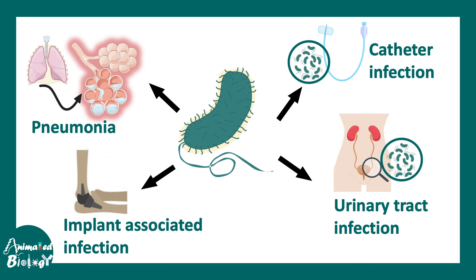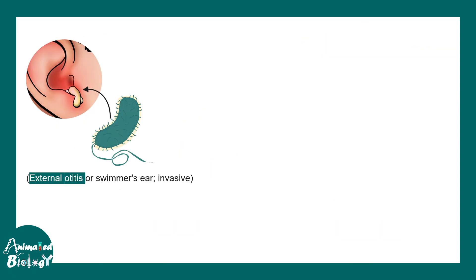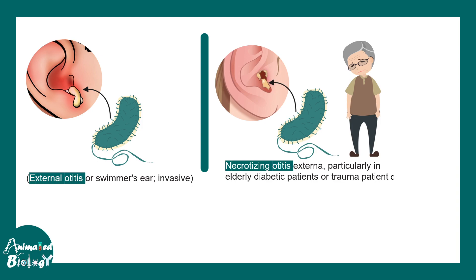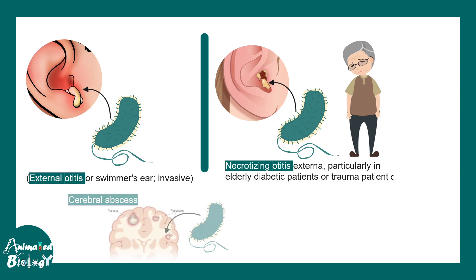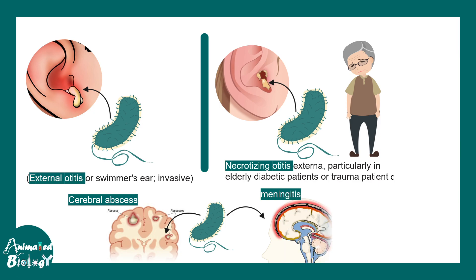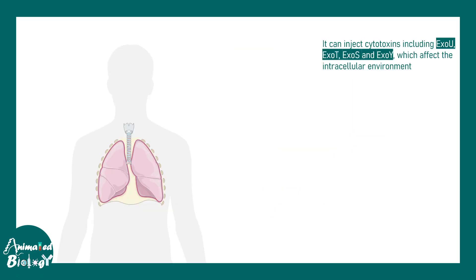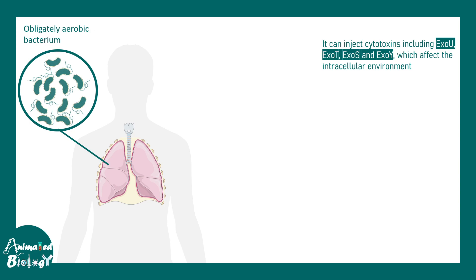Infection can be localized or systemic. One of the most common localized infections is external otitis — an ear infection that occurs in swimmers, also known as swimmer's ear, because Pseudomonas is commonly found in water or soil. Diabetic and elderly individuals may develop necrotizing otitis. It can also lead to meningitis. In the lung, it grows well because of the aerobic environment and can inject several cytotoxins such as ExoU, ExoT, etc. It grows very well in airway epithelium.